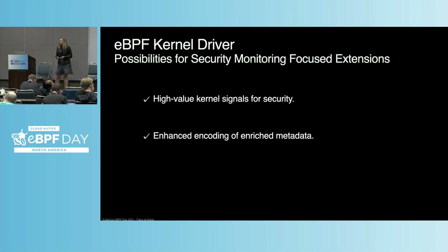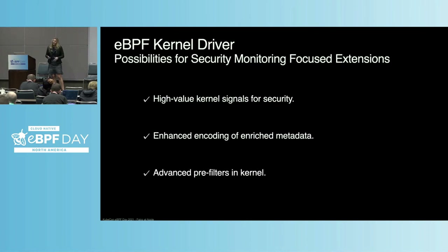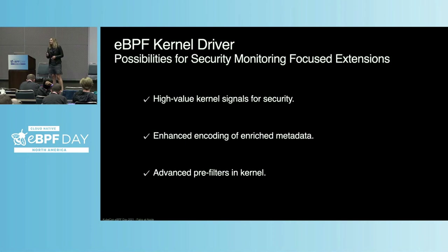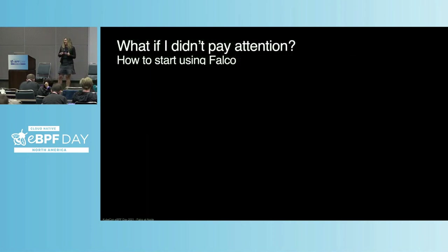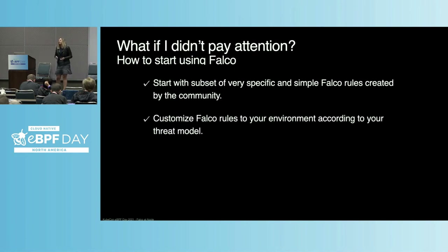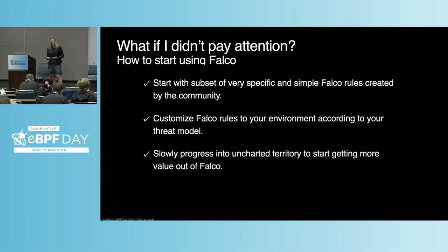Enhanced encoding of the enriched metadata around process collection would address the challenges of making sense out of command args or file descriptor names. Advanced pre-filters in the kernel could also be an enticing proposition — where the semantics or intent of a process is encoded as a state vector for more dynamic AI/ML-like reasoning right in the kernel. Start with very simple rules created by the community. Customize Falco and Falco rules to suit your environment and threat model better. Then slowly venture out, eventually into deep space, to start getting even more value out of the tool, for which sophisticated data modeling approaches can be of help.